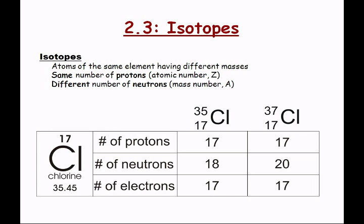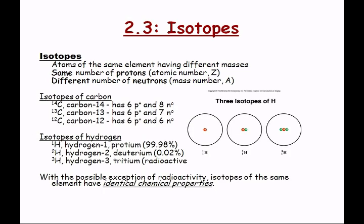Chlorine always has 17 protons. So chlorine-35 must have 18 neutrons (35 minus 17), and chlorine-37 must have 20 neutrons (37 minus 17). Here are some more common isotopes — the isotopes of carbon. If anybody's heard of carbon dating, they use one of these isotopes to figure out how many years something has been dead.